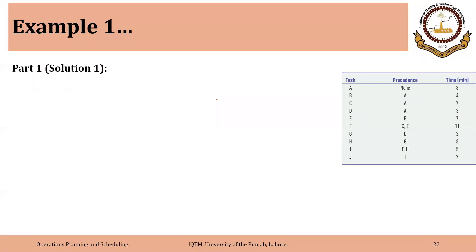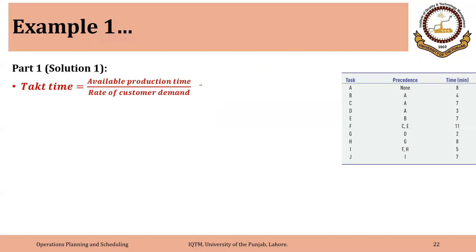First we need to find the takt time. The formula for takt time is available production time divided by rate of customer demand, and both should be for the same time period. So that is 40 hours times 60 minutes per week, divided by a weekly demand of 120 television sets. That is 2400 divided by 120, so the takt time will be 20 minutes.